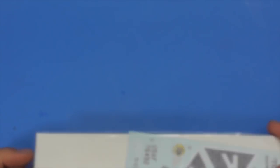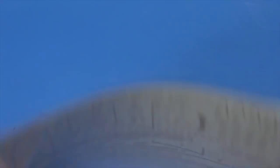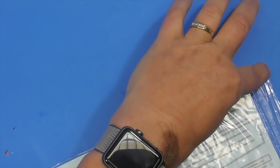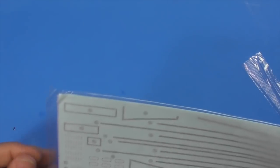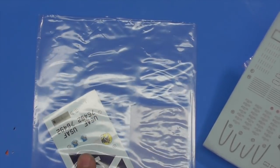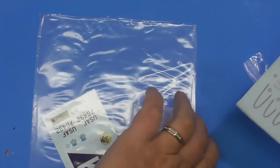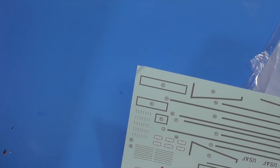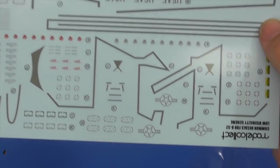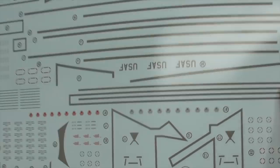Decals, Cartograph decals. There are no instrument panel decals. There are walkway decals, there are some stencils, and then these are the markings. There's the stars and bars right there, right in front of my face. They look like your typical wonderful Cartograph decals. There's a plus for the kit.